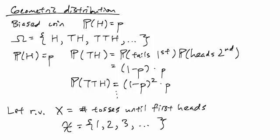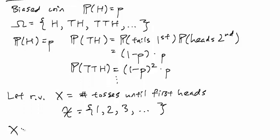I'll denote this as script X, and this is the alphabet of random variable X, meaning that these are the possible values that random variable X can take on. As a reminder, a random variable is a function that maps from the sample space to this alphabet.